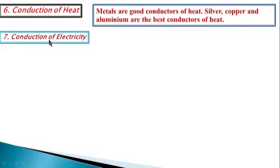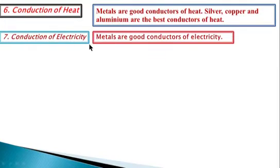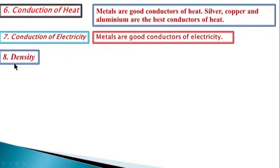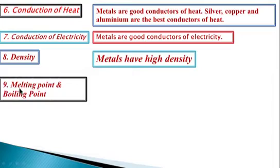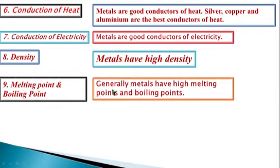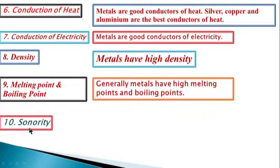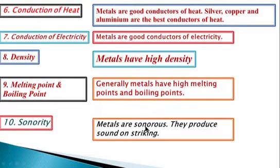Seventh, conduction of electricity — metals are good conductors of electricity and therefore wires of electric circuits are made up of metals. Eighth, density — metals have high density. Ninth, melting point and boiling point. Tenth, sonority — metals are sonorous; they produce sound on striking.